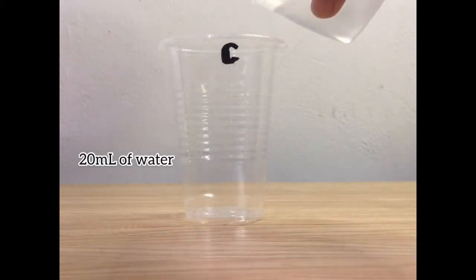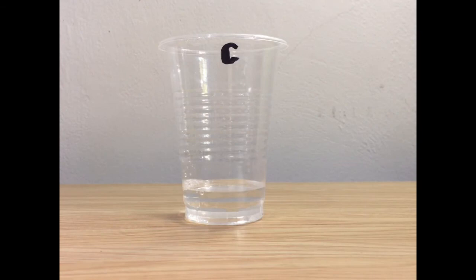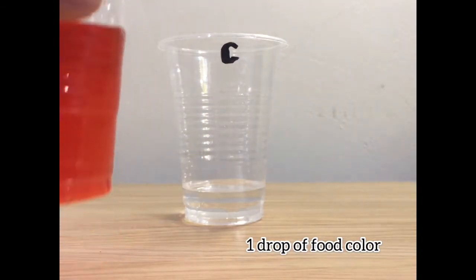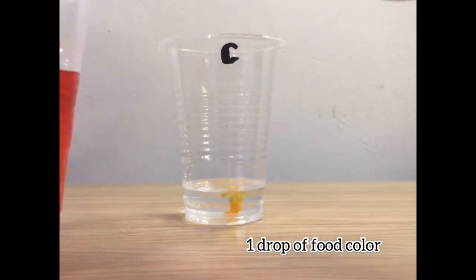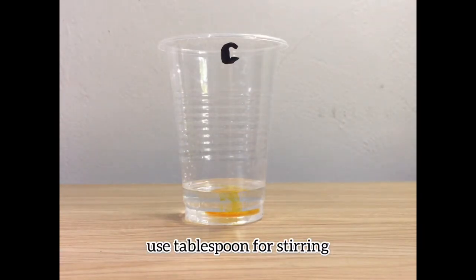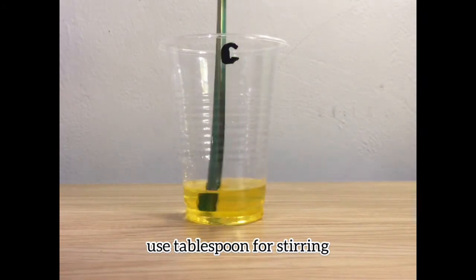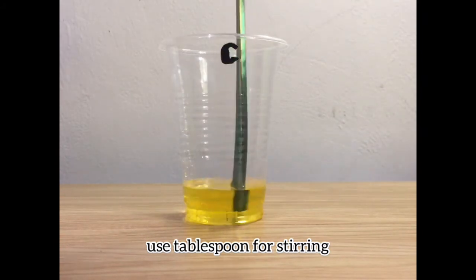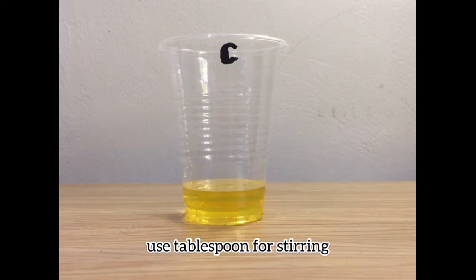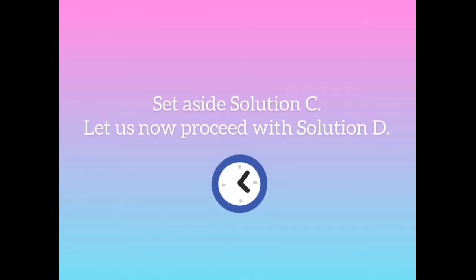In cup C, put 20 ml of water. The next step is to stir the liquid until all the food color is dissolved in the water. And there you have our solution C.